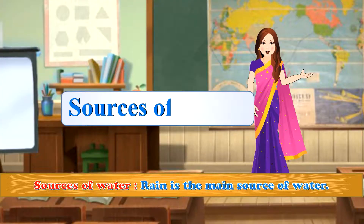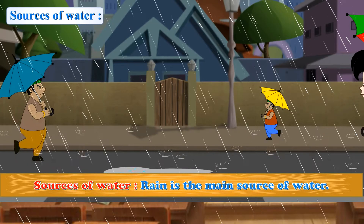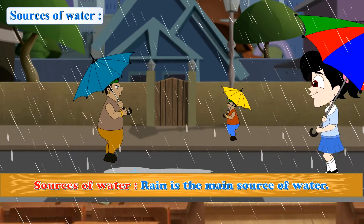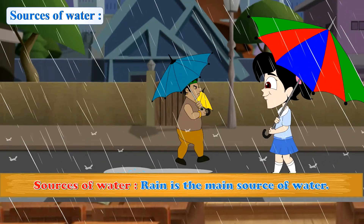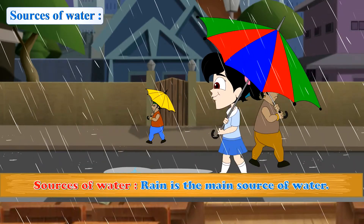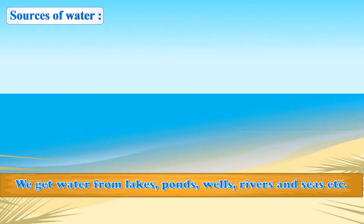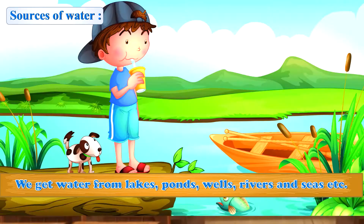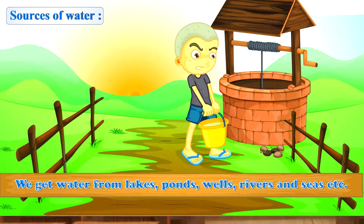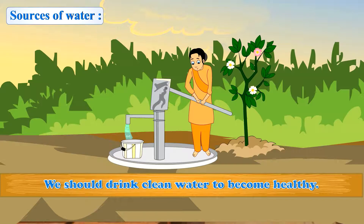Sources of Water. Rain is the main source of water. We get water from lakes, ponds, wells, rivers and seas, etc. We should drink clean water to become healthy.